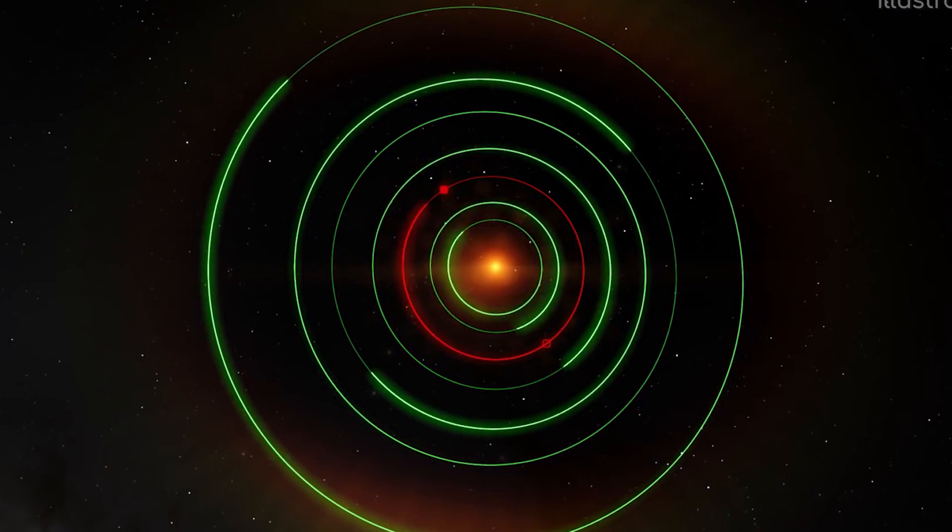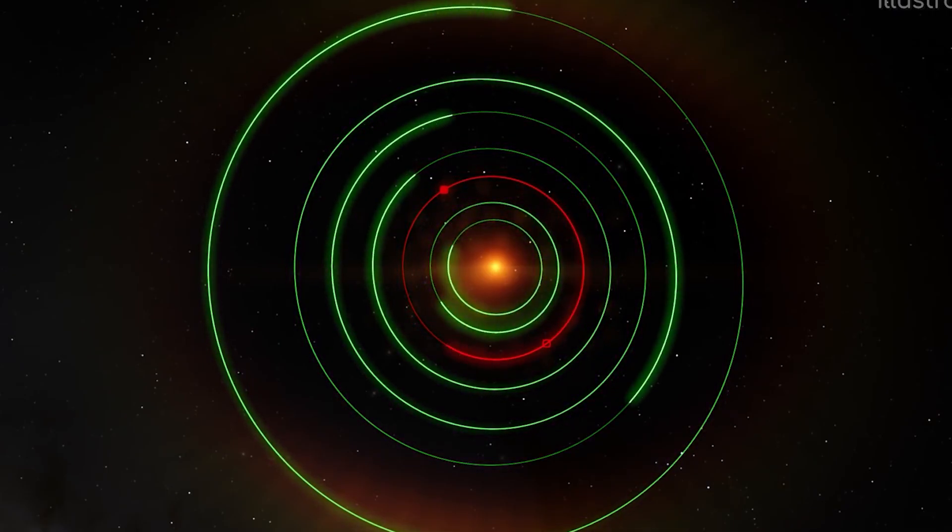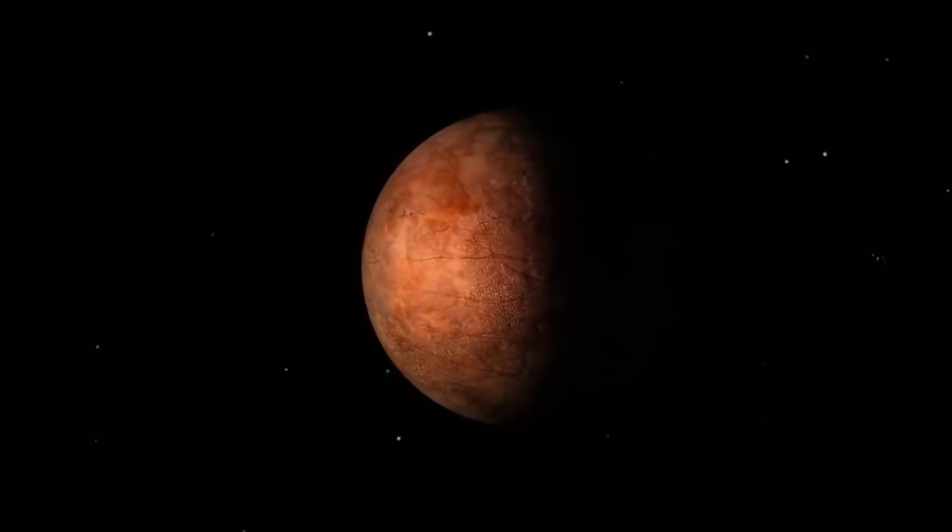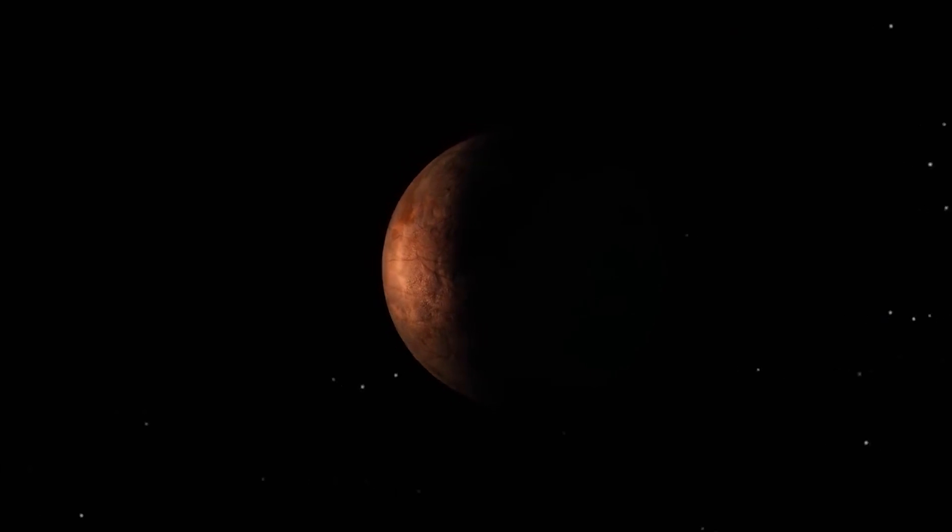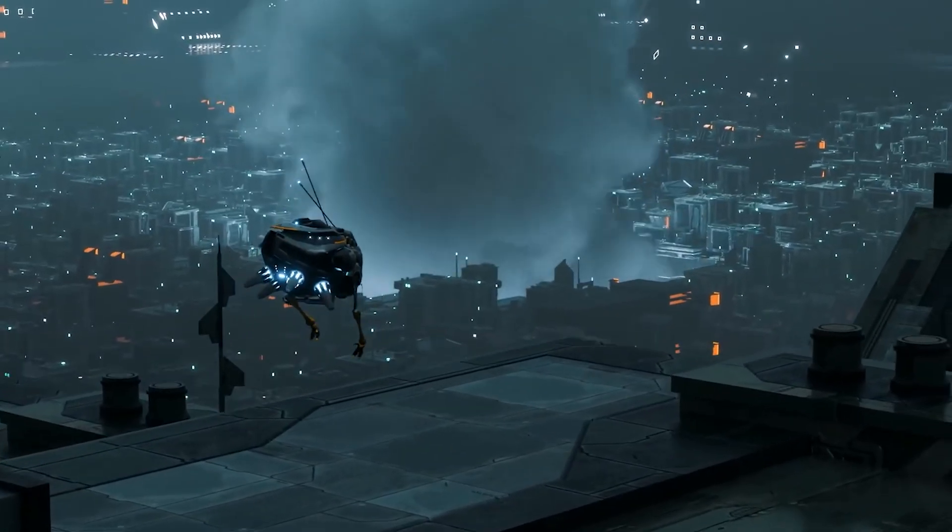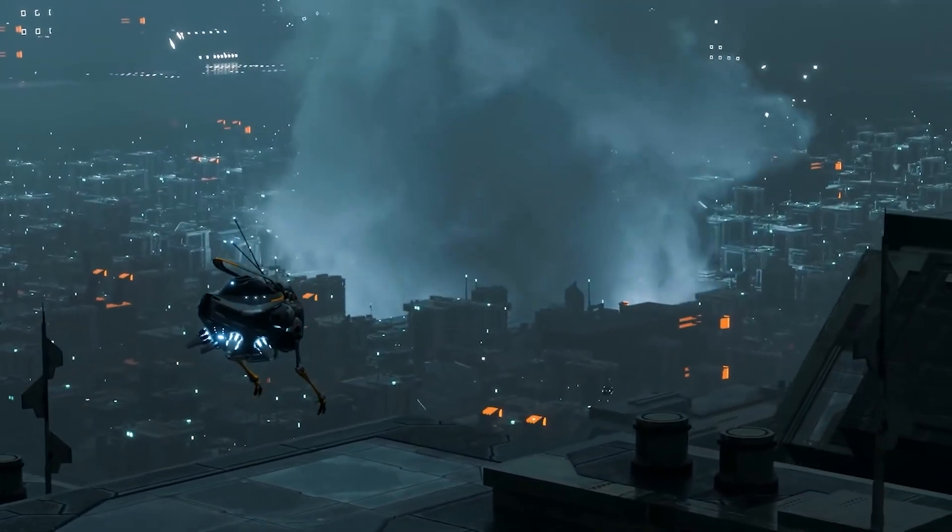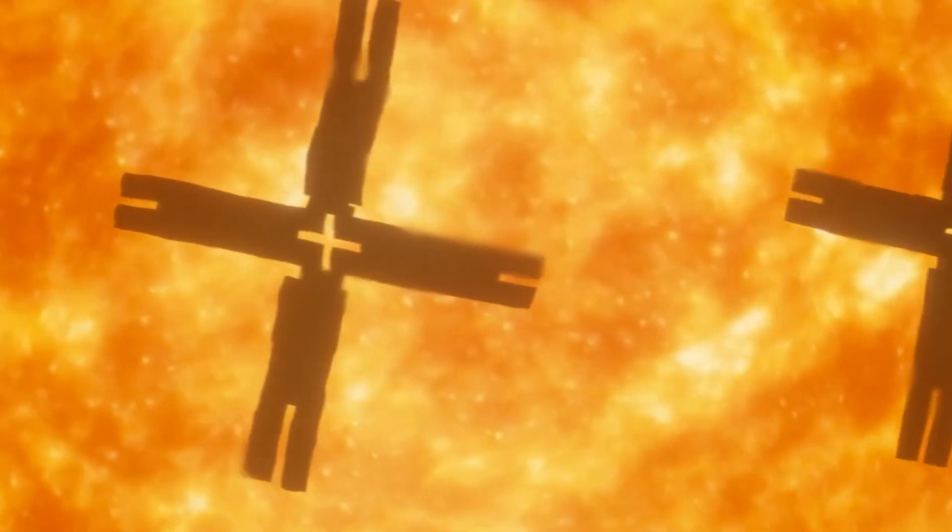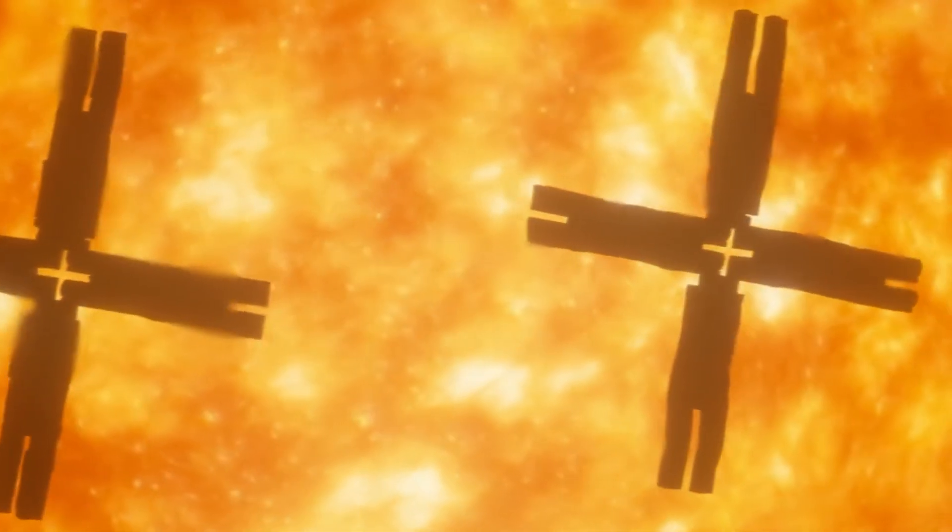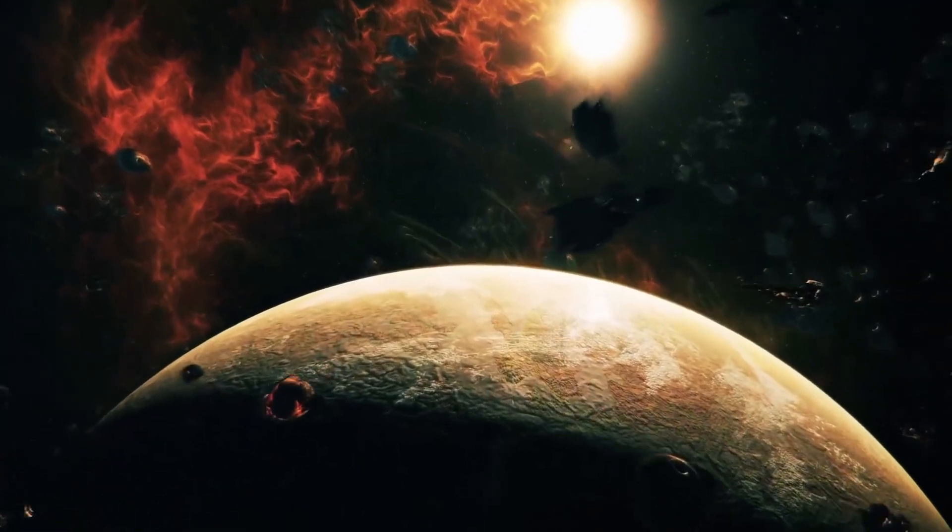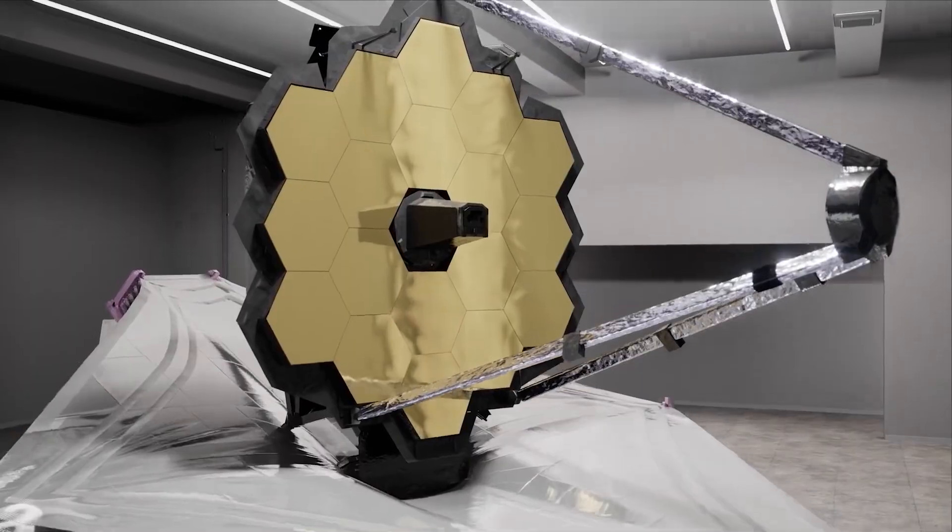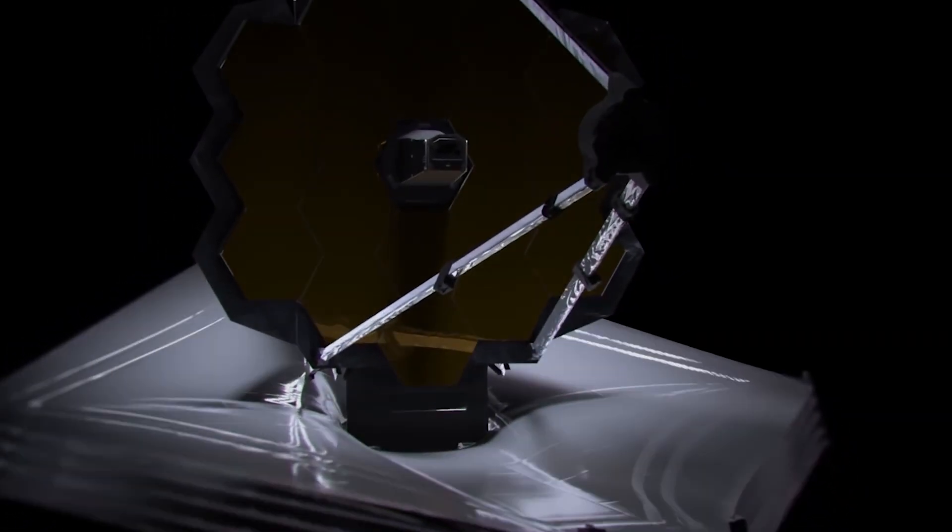Proxima b orbits so closely to its host star that it may be tidally locked as we've mentioned before, with one side of the planet always facing the star while the other is in perpetual night. The civilization on a tidally locked planet will probably need to focus on its lighting infrastructure and could use very bright orbital mirrors to reflect sunlight onto the night side of the planet, which could be seen by our telescopes, but that's of course just a hypothesis.